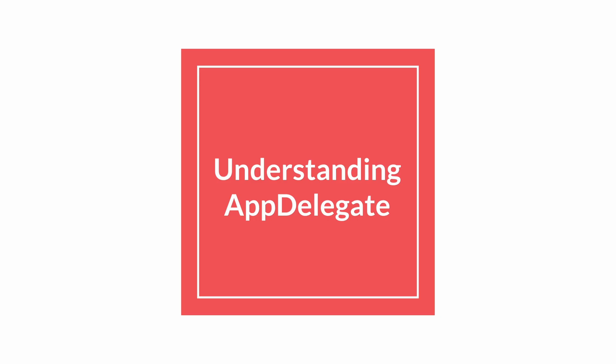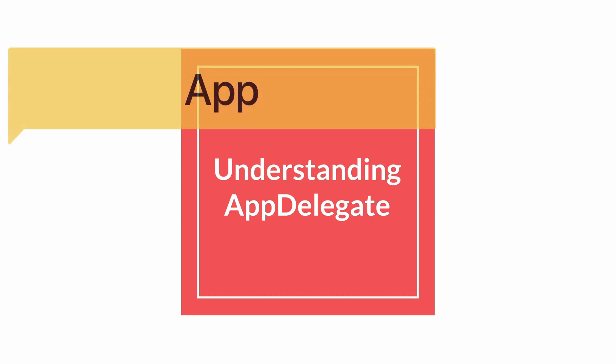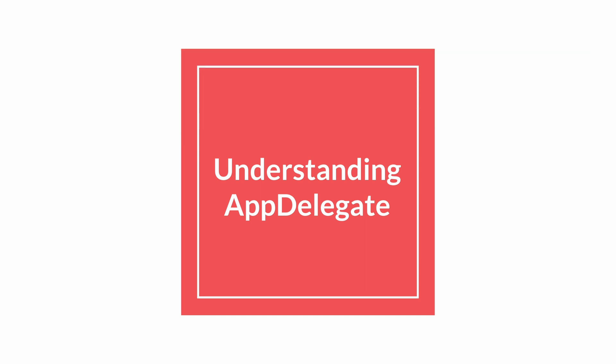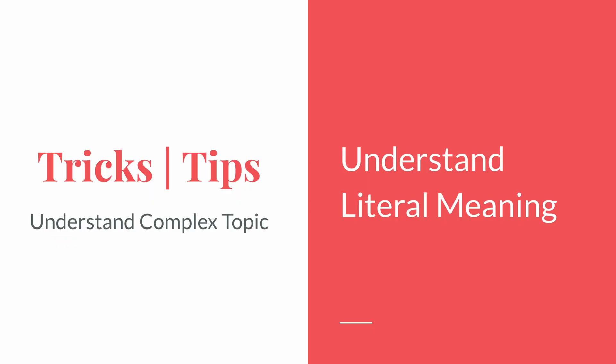The term AppDelegate is a combination of two words: 'app' and 'delegate.' App is short for application, a software program which we are creating, and delegate is like assigning a particular task to different people. One quick trick for understanding any complex programming topic is to think about the literal meaning of the word and then relate it to the programming concept — this helps you break down the complexity of that topic.